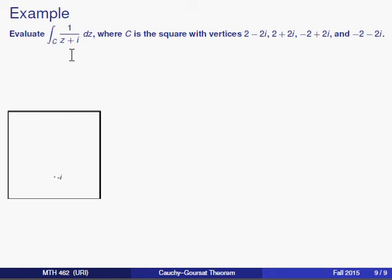Now the function one over z plus i is not analytic at minus i. And therefore, I can't just use the Cauchy-Goursat theorem here. Now I could parameterize the four sides here and compute the integral as I have in the past. But let's try and do something a little bit more clever.